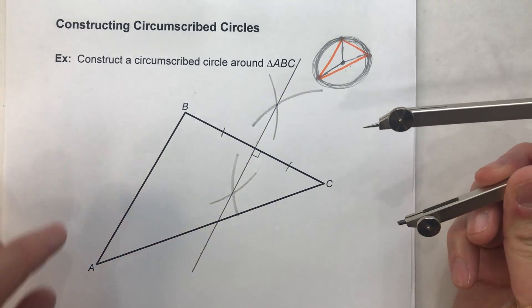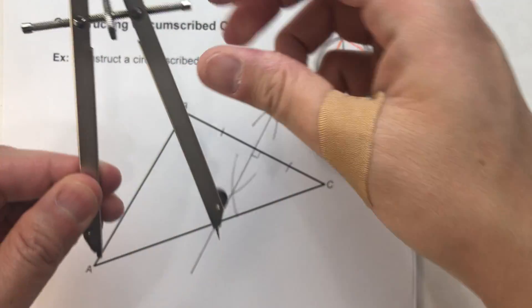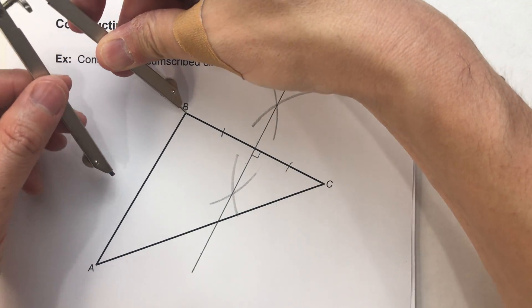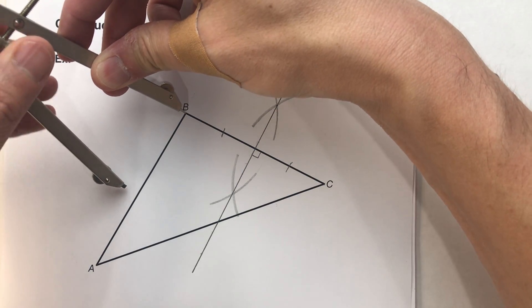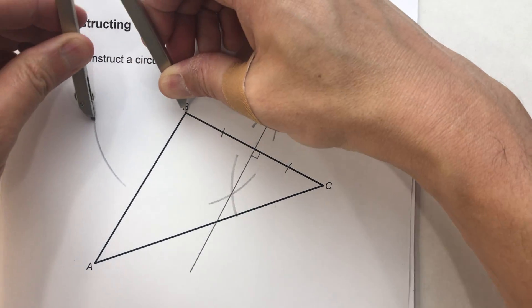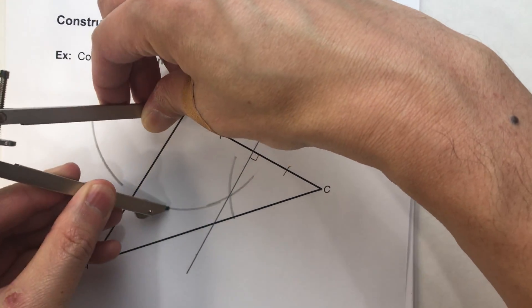Now, let's go to the next side. On this one, again, set my compass setting to more than half way across the segment. Swing an arc above, swing an arc below.